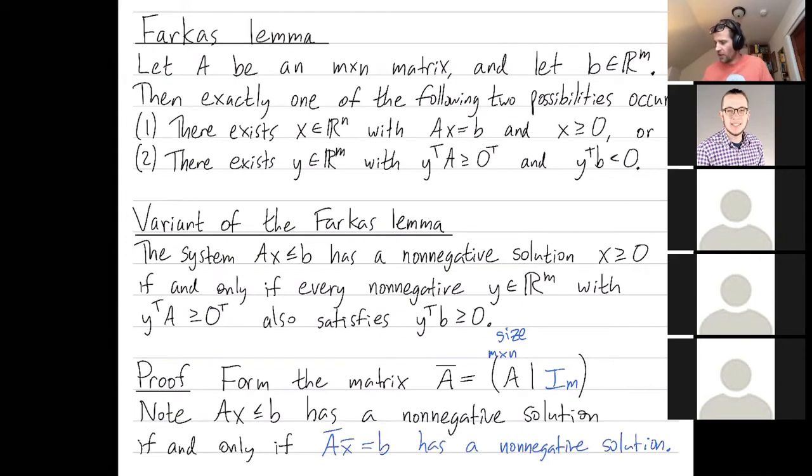So from all the variables in x, x has n variables inside of it. I've added m more in x bar, right? x bar has n plus m variables in it. You can think of those extra m variables that I've added as sort of like being slack variables, right?